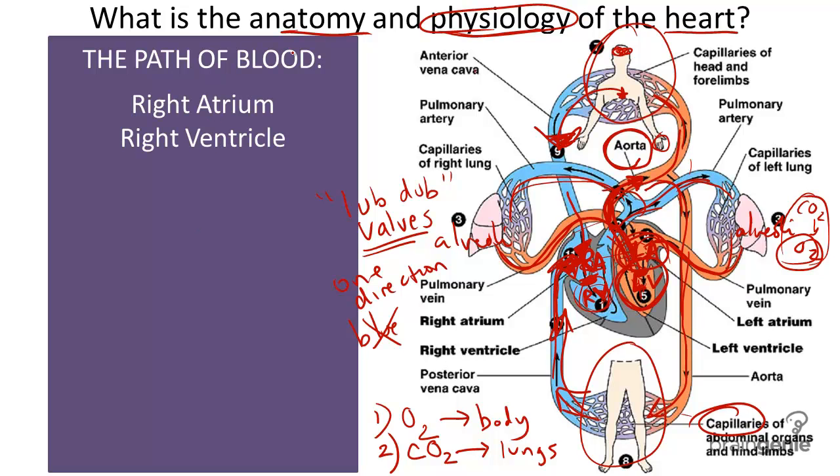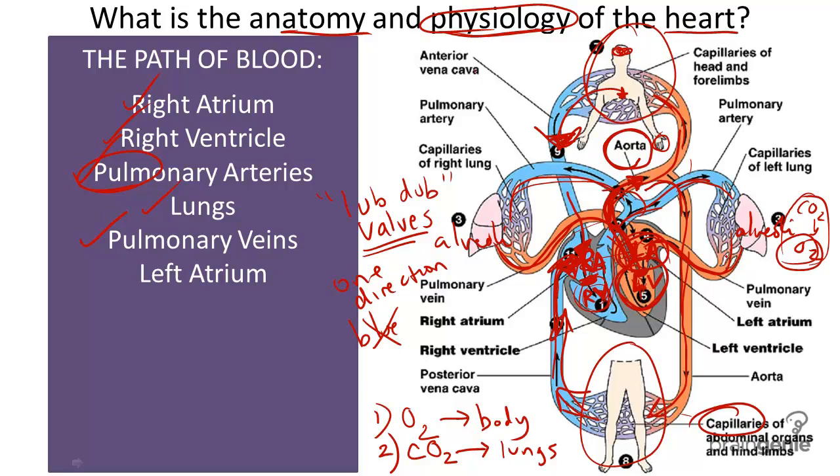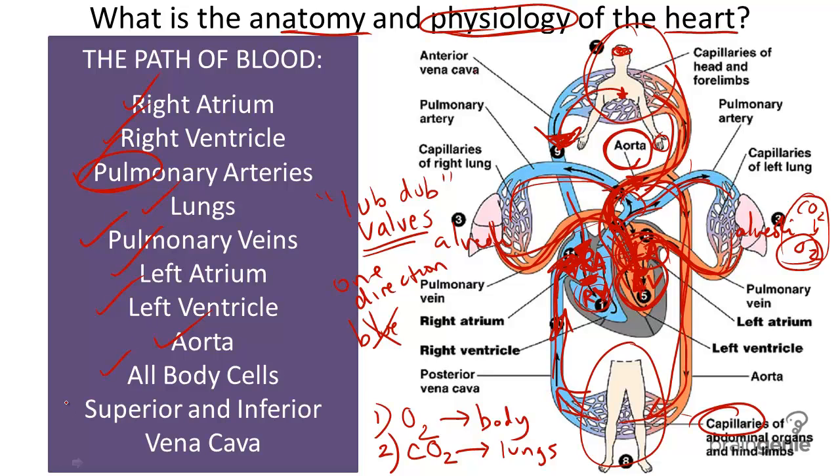We start with the right atrium, travel to the right ventricle, where deoxygenated blood travels through the pulmonary arteries to the lungs. And then the lungs now have exchanged carbon dioxide for oxygen. Now we can transport this oxygen-rich blood back to the left atrium, the left ventricle, and from there, travel through the aorta to all the body's cells. And once we've exchanged gas at all of the body's cells, we've collected them in the major veins all the way up to the biggest veins, superior and inferior vena cava. Good luck!